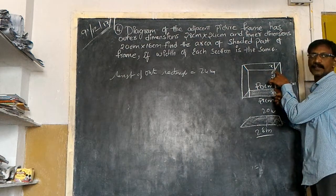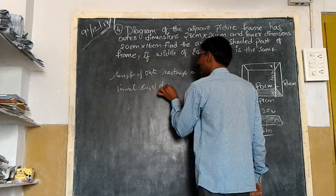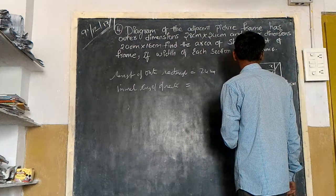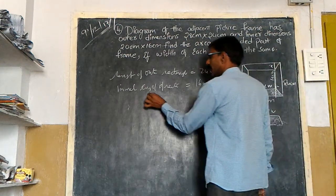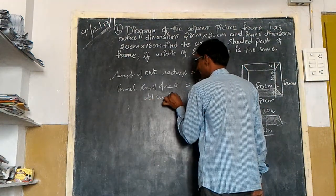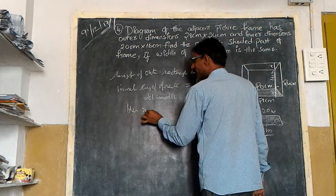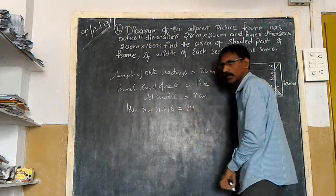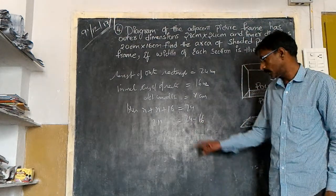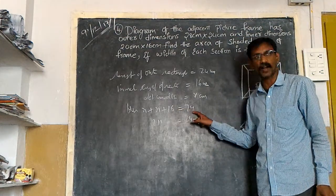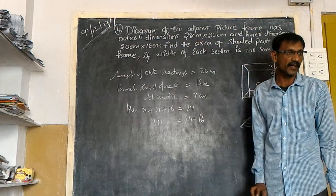The inner length of the rectangle is sixteen centimeters. Let width equal x centimeters. Then x plus x plus sixteen must equal twenty-four centimeters. So two x equals twenty-four minus sixteen. These two are constants and these two are variables, so sixteen will go to the other side and be subtracted from twenty-four.